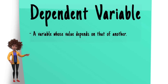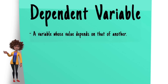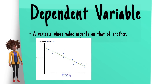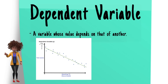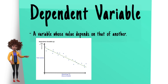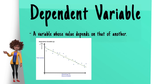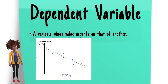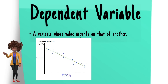Dependent Variable — just like an independent variable, a dependent variable is exactly what it sounds like: it is something that depends on other factors. For example, a test score could be a dependent variable because it could change depending on several factors, such as how much you studied or how much sleep you got the night before you took the test.